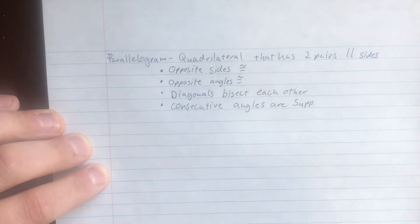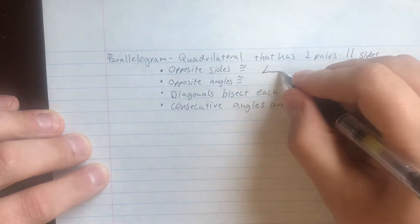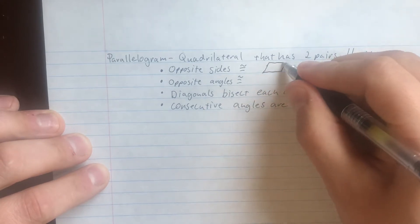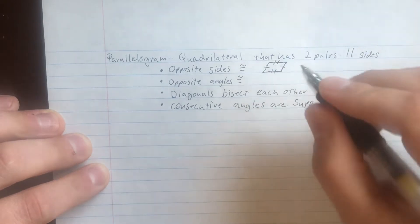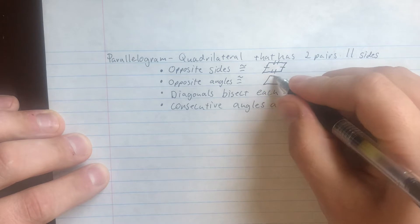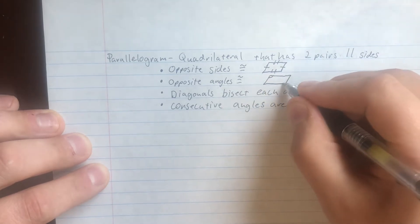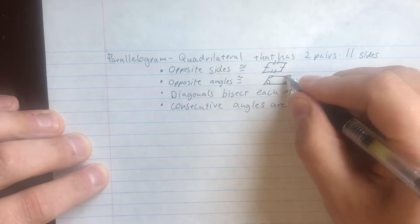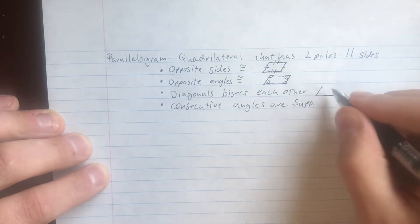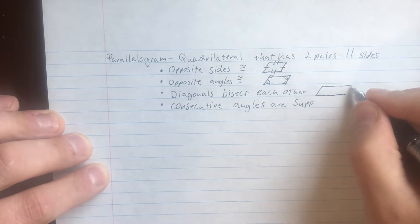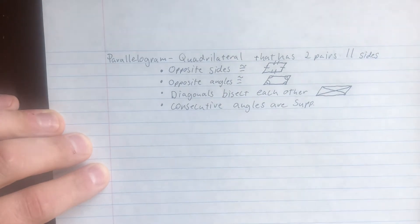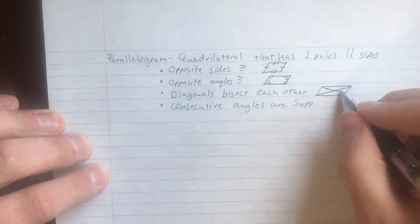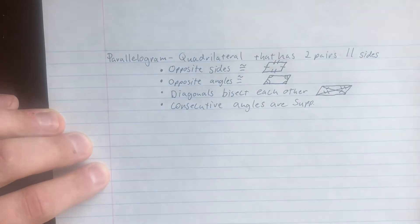Going to draw this out in some diagrams. Opposite sides congruent means they are across from each other — we'll indicate that with tick marks. The opposite angles are also marked with tick marks to show they're congruent. The diagonals go from corner to corner. The first diagonal in this case is longer than the second one — they are not the same length. When divided, we have four segments, and two pairs are congruent.